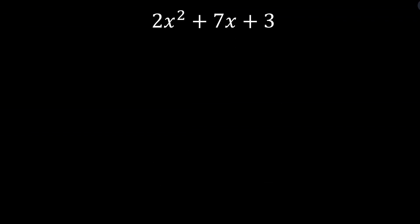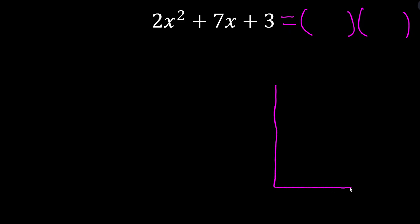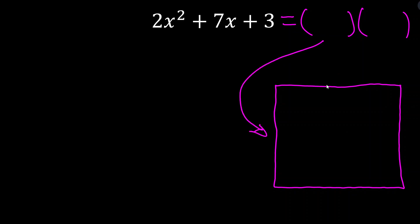So what are we doing when we're factoring a quadratic? We're trying to write the quadratic equal to the product of two factors — two binomials multiplied together. One way to represent this situation is using an area model. This is where the box in Xbox comes into play. The result of two quantities being multiplied together is the same as the area of a rectangle where one of those quantities is the length and the other is the width.